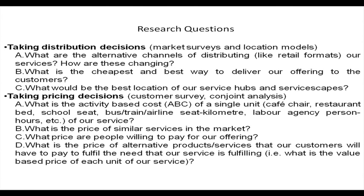For pricing decisions, customer surveys and conjoint analysis can be used. We look at the activity-based costing (ABC) of a single unit — for example a café seat, restaurant bed, bus or train or airline seat per kilometre, labour agency person hours, etc. of our service.